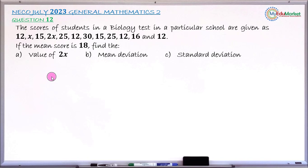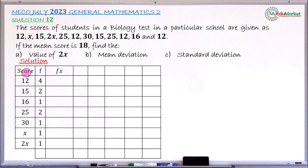Let's attempt to answer this question together. First, convert the data from raw form into tabular form, considering numbers that appear more than once and assigning appropriate frequencies. For example, score 12 appears 4 times so it has frequency 4, and score 15 appears 2 times so it has frequency 2.